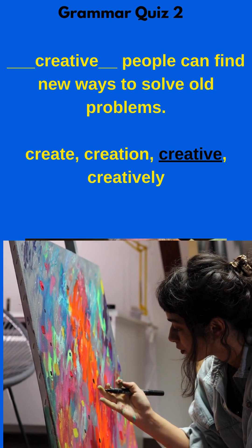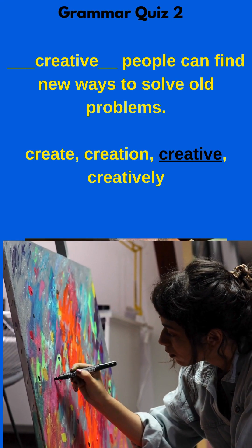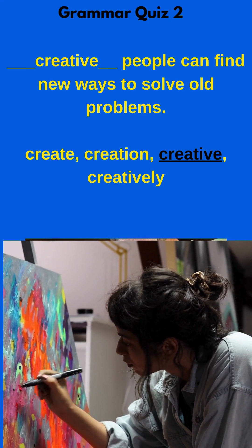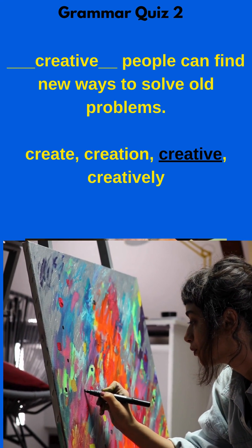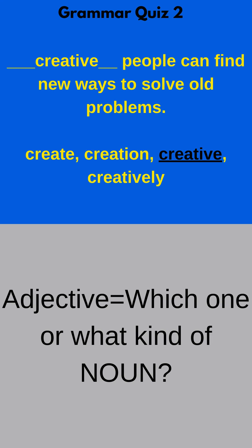I see 'people,' and the blank is before people. So I know it needs to be an adjective, which is 'creative,' because we're saying what kind of people. So creative people. Need an adjective there.